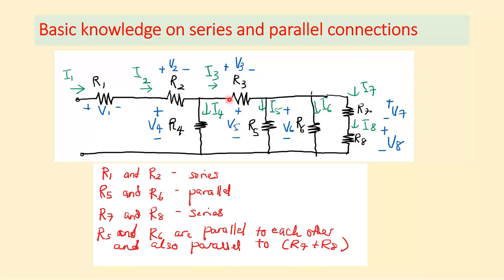R2 and R3 are not in series because at that node there is R2, R3, and R4. R5 and R6 are in parallel because both ends of the two terminals are connected to each other. R7 and R8 are in series because the terminal of R7 connects only to the terminal of R8 with no other component at that node.